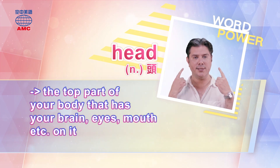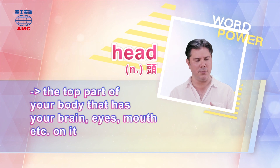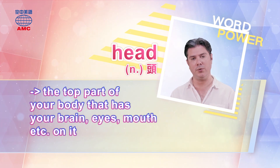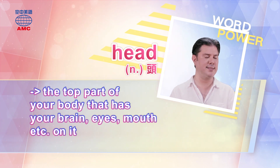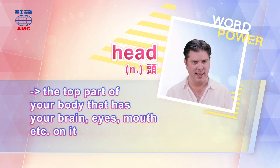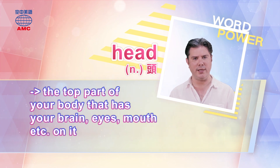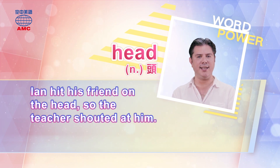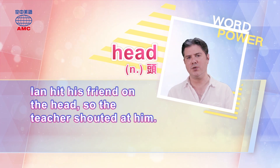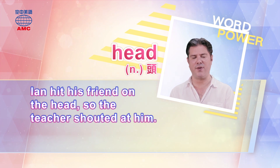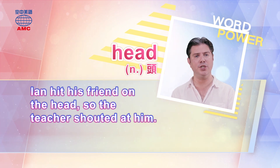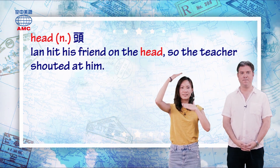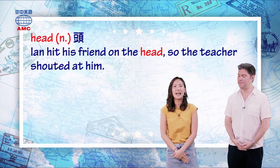Your head is this part of your body — it's on the end of your neck. Most animals have their eyes, brain, nose, mouth, and ears on their heads. Heads come in all shapes and sizes, and most animals, even insects, will have them. For example: 'Ian hit his friend on the head, so the teacher shouted at him.' Head就是头，例句说：Ian打了他朋友的头，所以老师对他大喊。